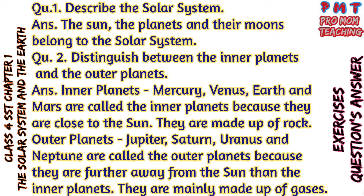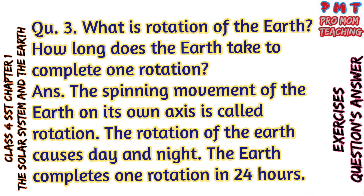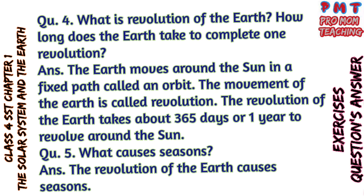The outer planets are further away from the Sun than the inner planets, and they are mainly made up of gases. Question 3: What is rotation of the Earth? How long does the Earth take to complete one rotation? Answer: The spinning movement of the Earth on its own axis is called rotation. The rotation of the Earth causes day and night. The Earth completes one rotation in 24 hours.